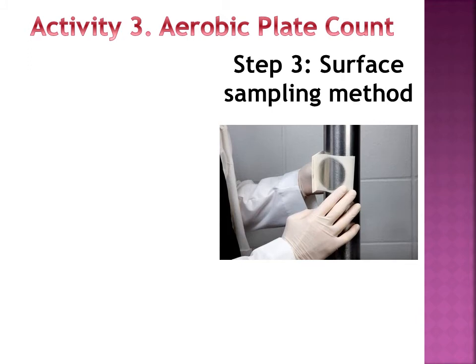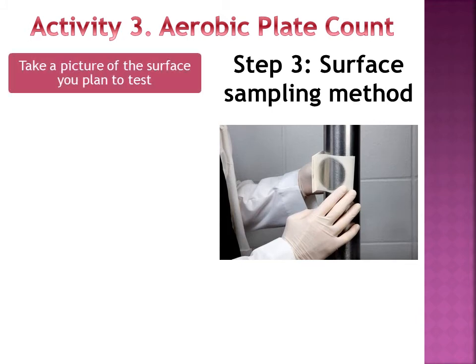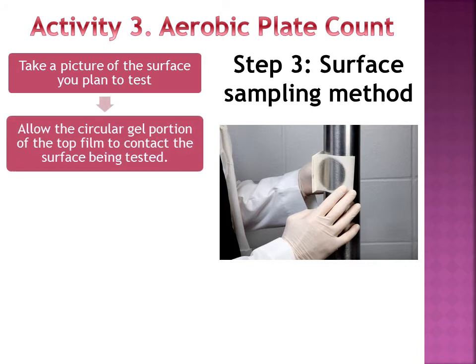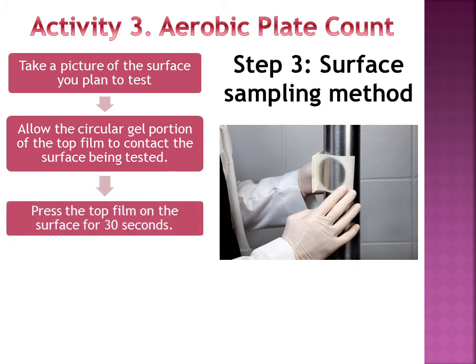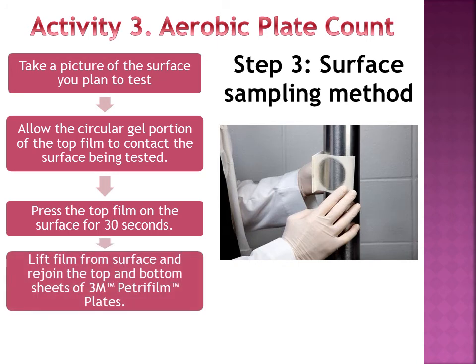Step 3 is the surface sampling method. Take a picture of the surface you plan to test. Allow the circular gel portion of the top film to contact the surface being tested. Press the top film on the surface for 30 seconds. Lift from the surface and rejoin the top and bottom sheets of the 3M Petrifilm plates.